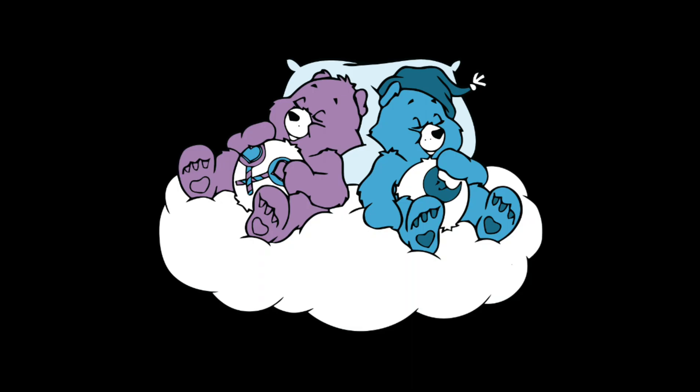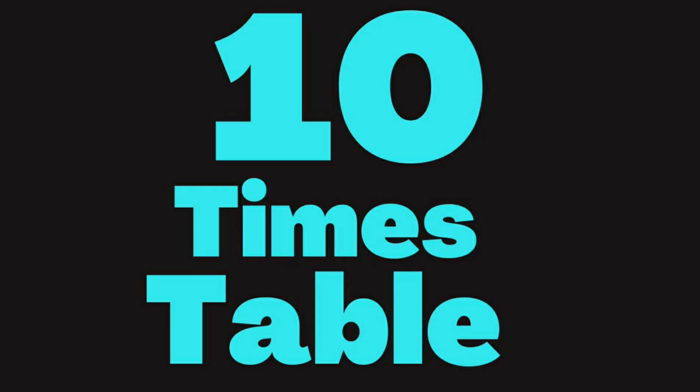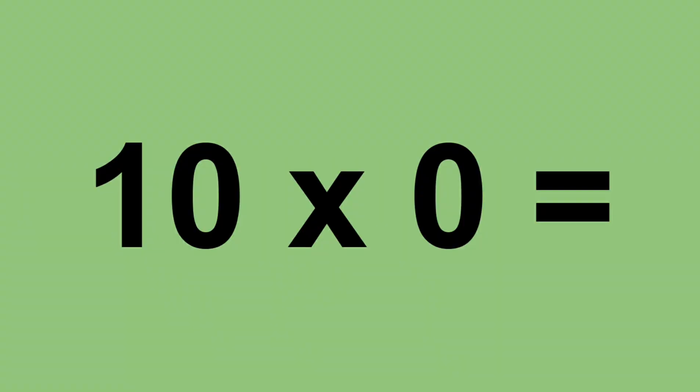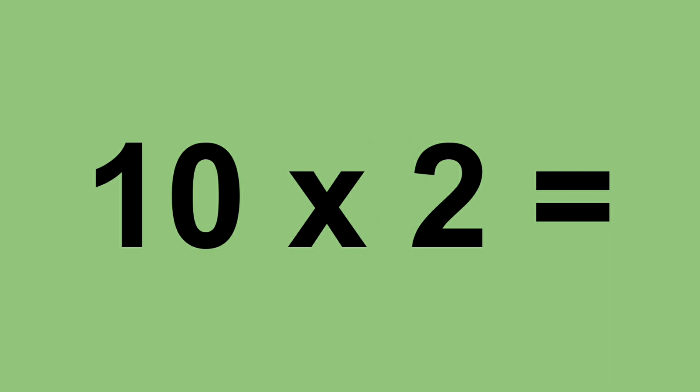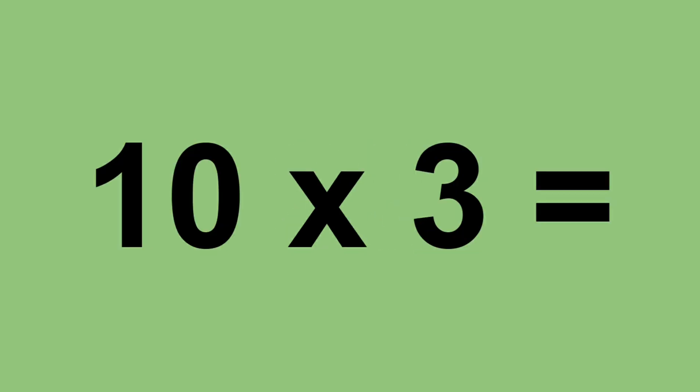Ten times zero equals zero. Ten times one equals ten. Ten times two equals twenty. Ten times three equals thirty.